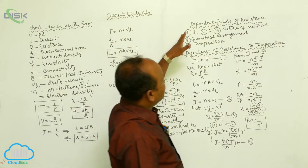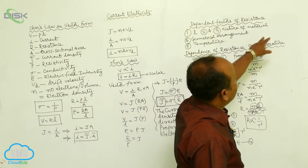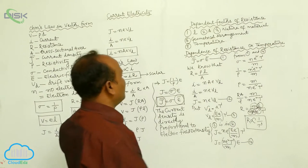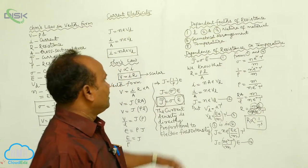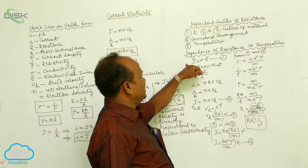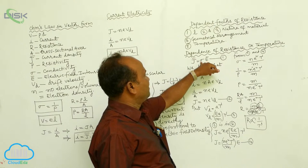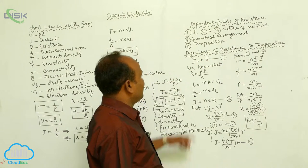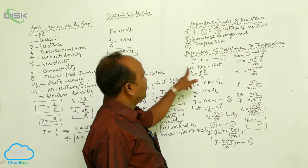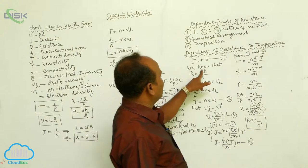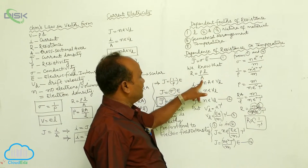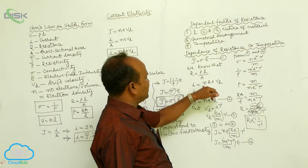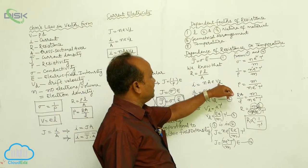Now, dependence of resistance on temperature. While calculating the formula, we write J equals sigma into E. We also know that R equals rho into L by A, and I equals n A e v_d.